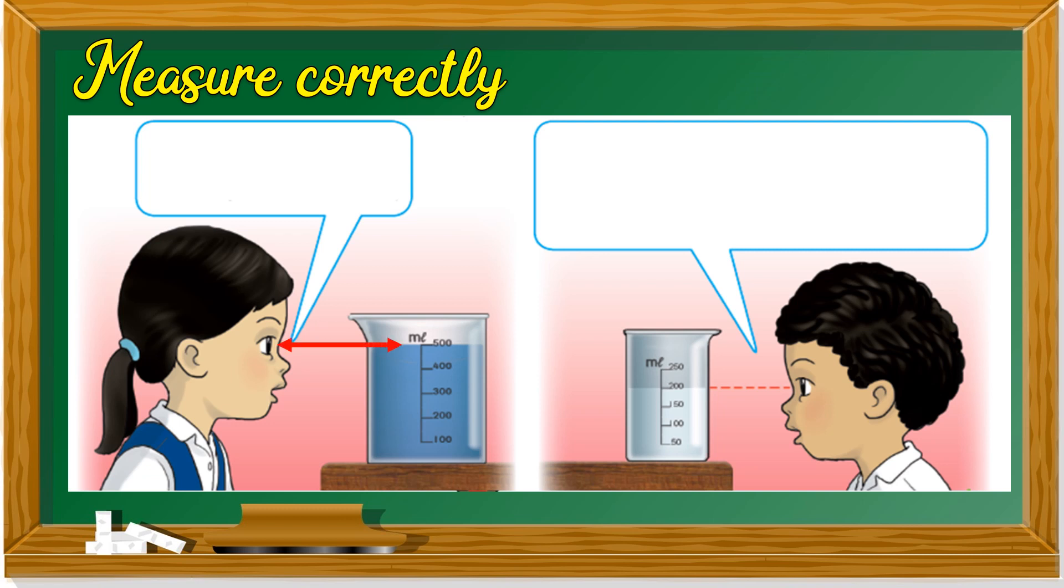When we measure, our eye must be on the same level as the liquid. Like the girl, same level, aras yang sama, selari, with the water. The volume of the water is 500 milliliter.